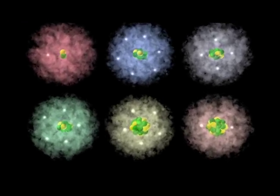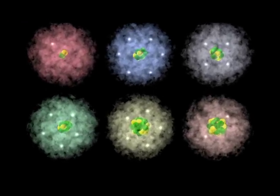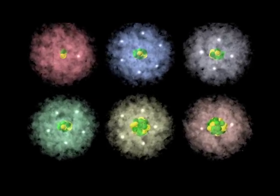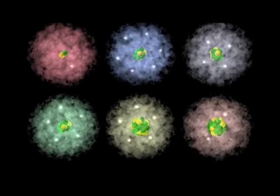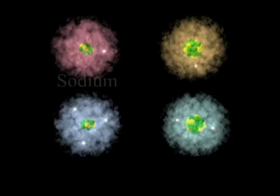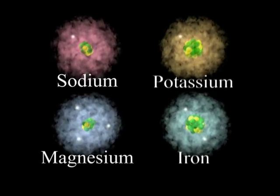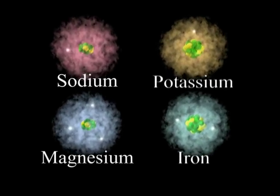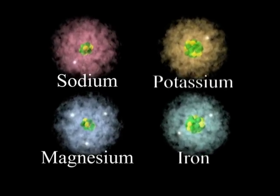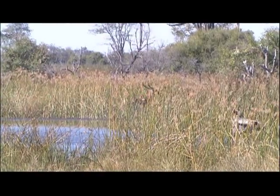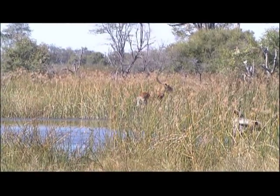Besides hydrogen, oxygen, carbon, nitrogen, phosphorus, and calcium atoms, other types of atoms such as sodium, potassium, magnesium, and iron also play critical roles in the functioning of living organisms but contribute little to their total mass.